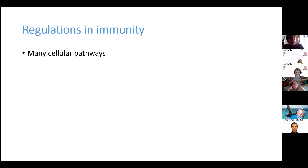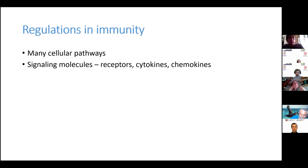I will start generally. As we know, immune reactions must be rigorously regulated. It is important to activate and terminate the immune system at the right time, and for that, many kinds of cellular pathways and signaling molecules serve — such as many receptors, many cytokines, and chemokines.